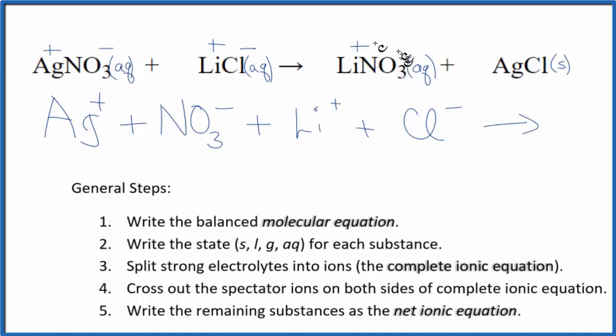In the products, lithium is +, the nitrate is -. We have lithium ion and the nitrate ion. For AgCl, that is a solid. In net ionic equations, we do not split solids apart—keep those together. So it's just AgCl. This is our complete ionic equation.